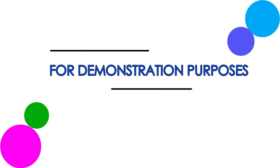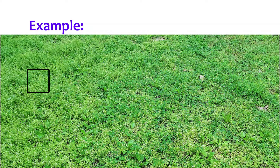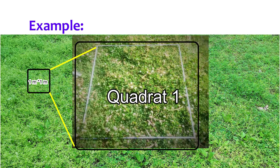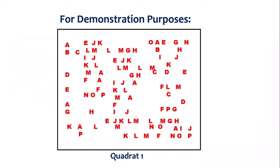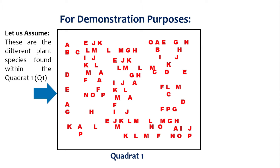For demonstration purposes, first randomly throw a one by one square meter quadrat in this plot, and let this be our Quadrat 1. For demonstration purposes, let us assume that these are the different plant species within Quadrat 1.